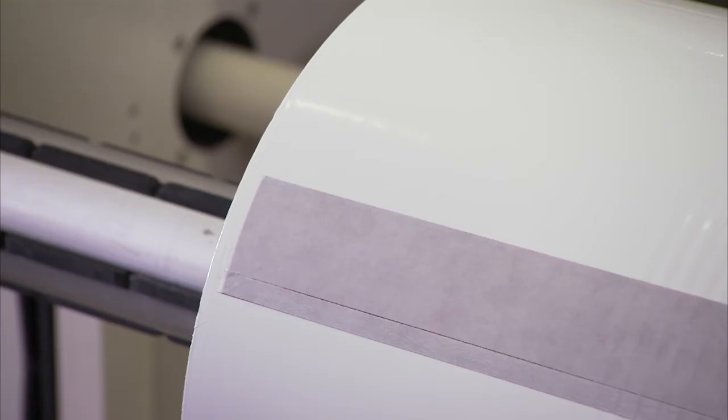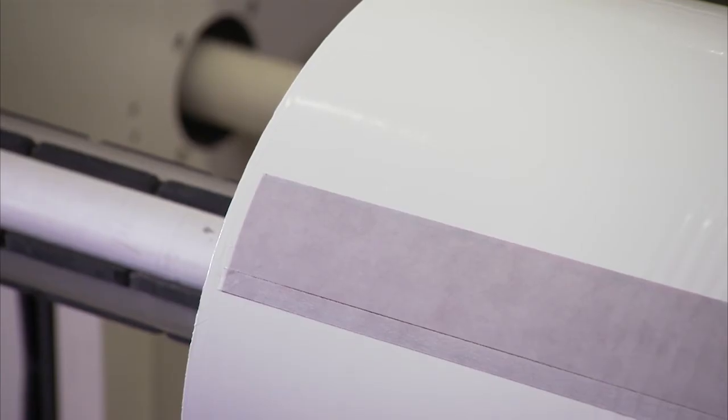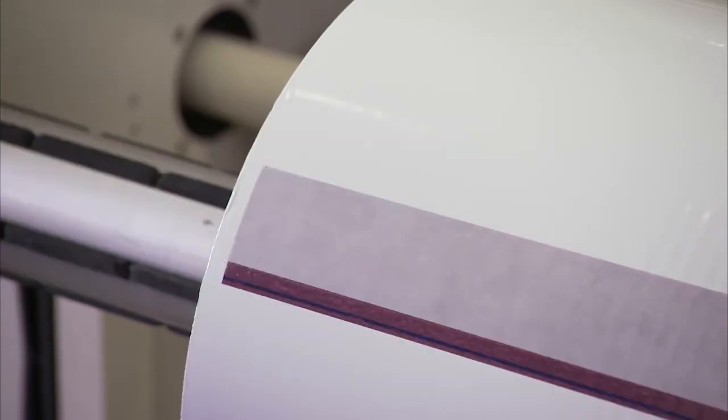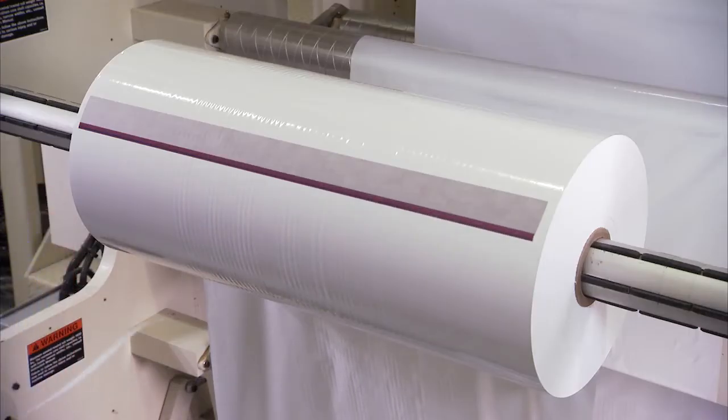To remove the lower liner, start about an inch in from the roll edge and from the center of the tape width, peel the lower liner off using a downward motion. Use a metal tape tool or your fingers to start the removal.